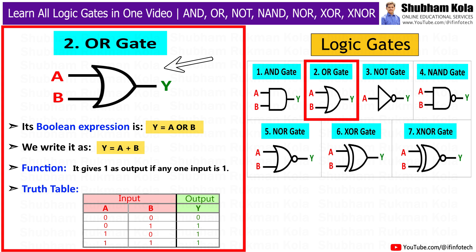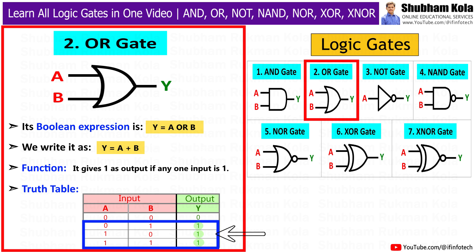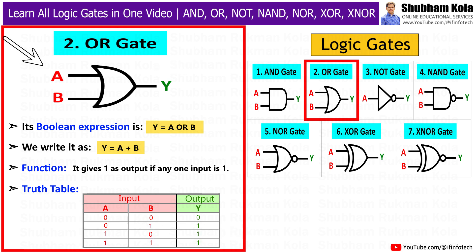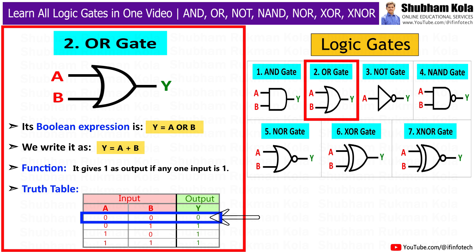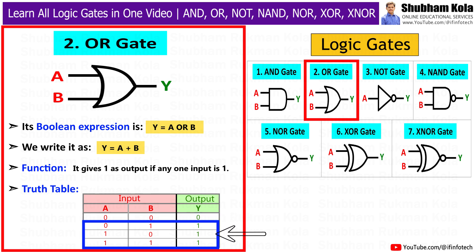The next gate is the OR gate. Its Boolean expression is y = A OR B, written as y = A + B. It gives 1 as output if any input is 1. Its symbol has two inputs going into a curved shape and the output comes out. In the truth table, the output is 0 only when both inputs are 0; in all other cases, the output is 1.